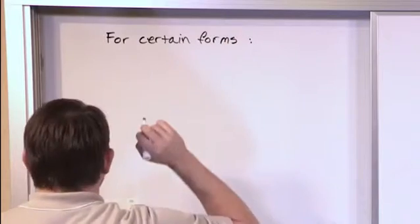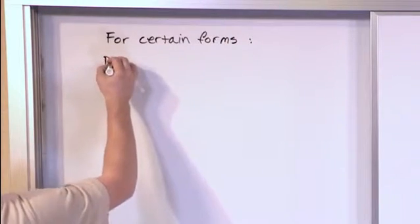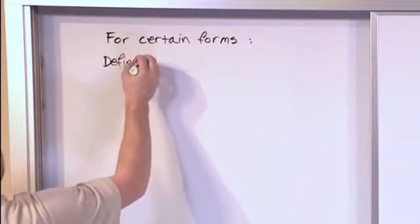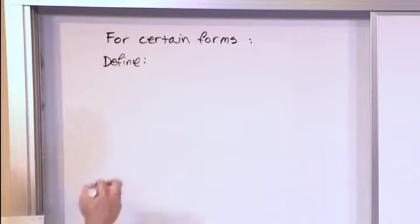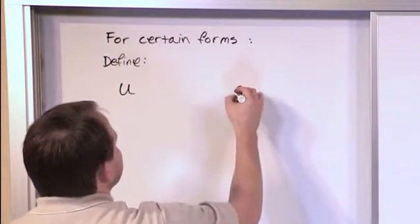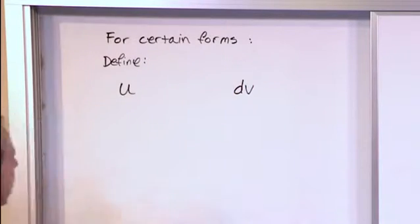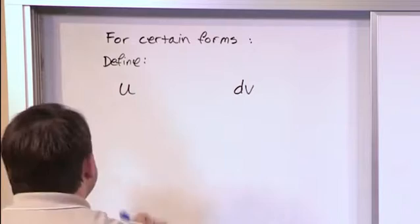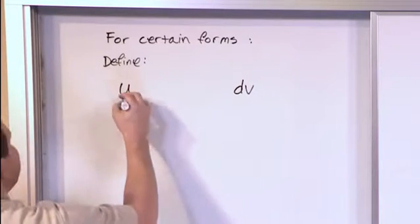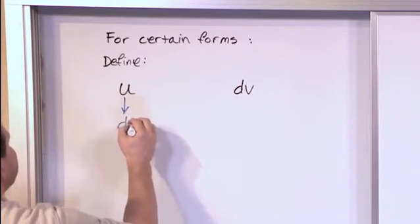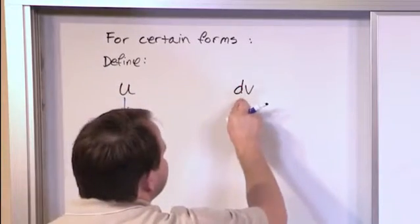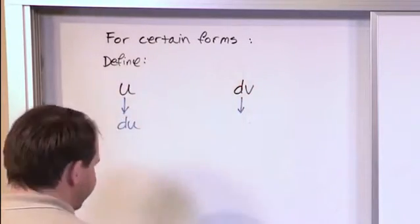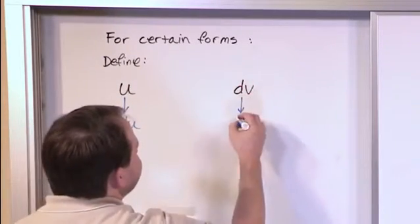You will look at your integral and you will choose part of this integral to be u, and then you will choose another part of this integral to be dv. I know you don't understand what dv is yet, but you'll do that. And then what you do is you take the u that you've defined and from that you calculate the derivative and you find du. And then you take the dv that you've defined as part of your original integral and you integrate this and you find v.